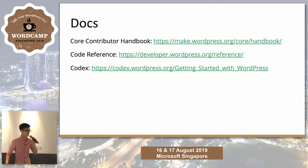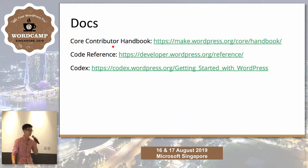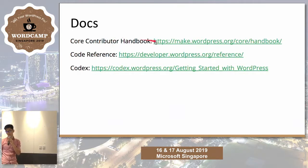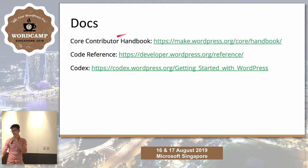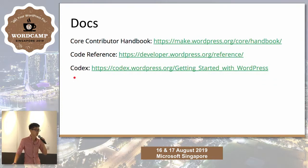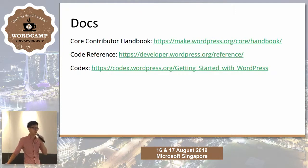These are some good documentation resources that really helped me throughout my journey and will help you if you want to get contributing. The first is the contributor handbook telling you how to get started — great if you enjoy reading, but you can also just talk to people who have contributed. The bottom two are the code reference and the codex — the holy grail of contributing. If you want to look up functions, you can find out how they work and what parameters are being passed.